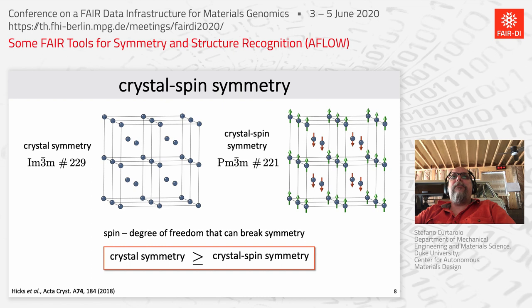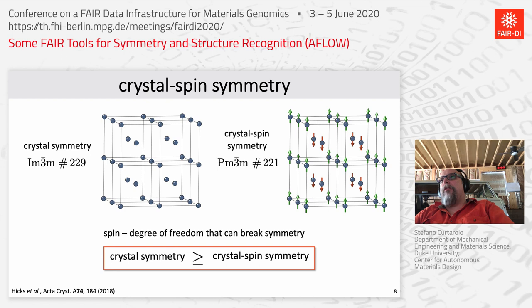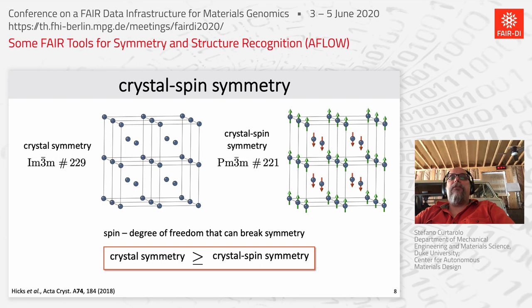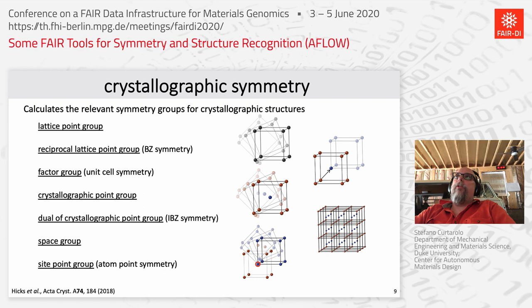Another thing you can do is identify crystal spin symmetry. There is a difference between crystal symmetry where atoms have no spin color, and spin symmetry where you assign spin-up or spin-down. The code tells you the space group for each case — for instance crystal symmetry 229, spin symmetry 2 — and which operations are conserved, confirming that crystal spin symmetry is a subgroup of crystal symmetry.